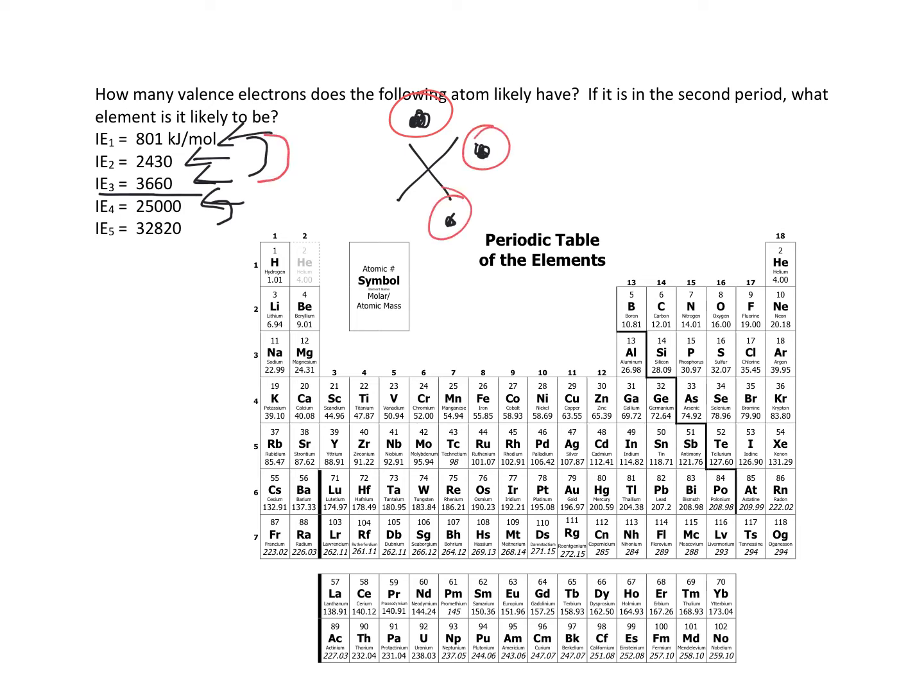Again, they do get progressively harder, but then the fourth one becomes really difficult because now you're pulling from an inner shell. So maybe you have a ring like this, and then you have three in your next ring. So once you lose these three, now you're pulling from an inner shell, and that's going to be that much harder. So this particular data here, since it lost three relatively easily, suggests that this atom has three valence electrons.